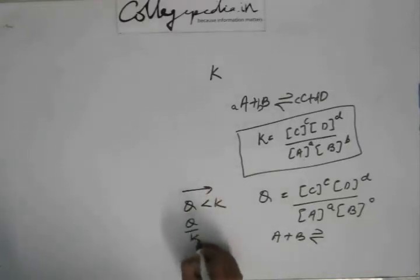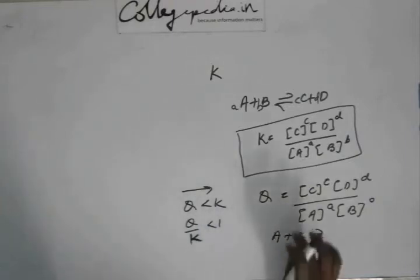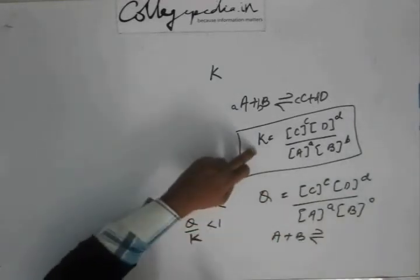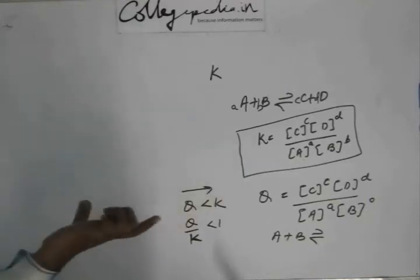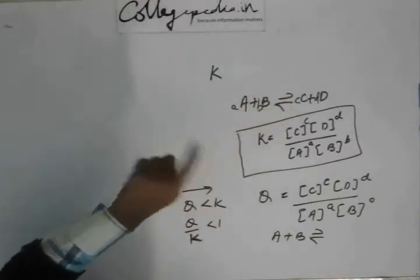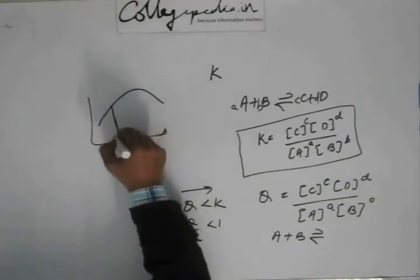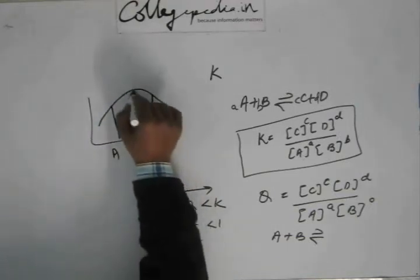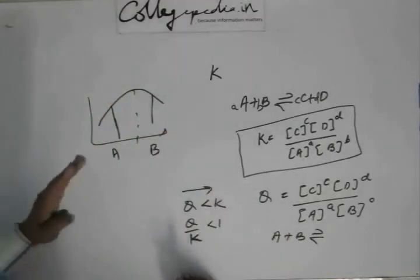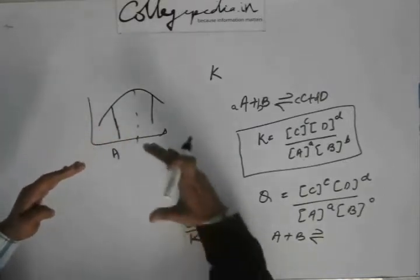If Q/K is less than 1, then the reaction is moving forward. The opposite is true if C and D are more — then C and D have to decrease, because equilibrium has to be achieved from both sides, whether you begin with A and B or with C and D. At equilibrium, entropy is maximum. The graph shows that whether you are at position A or position B, from both sides you reach the peak, as entropy increases towards equilibrium.